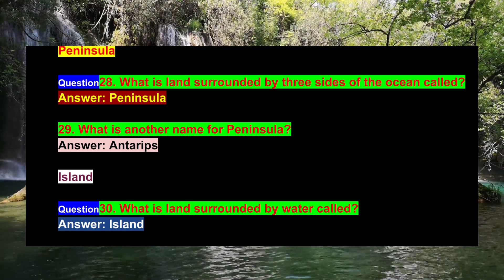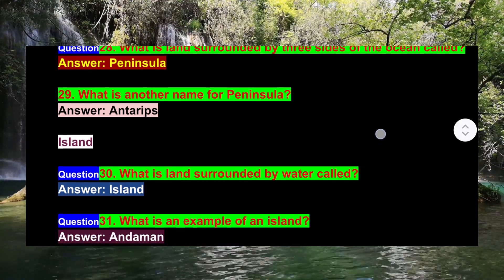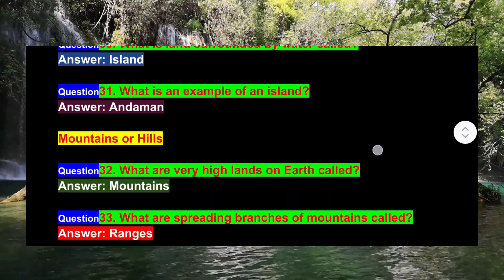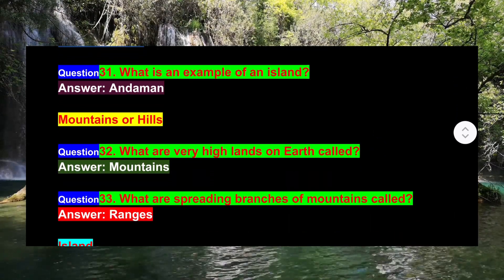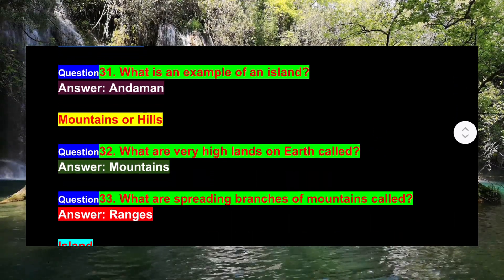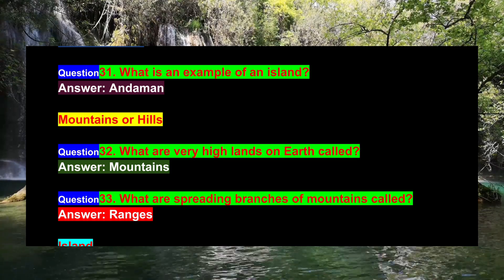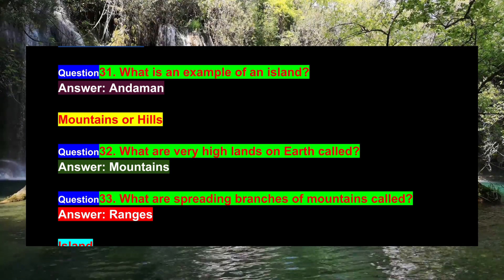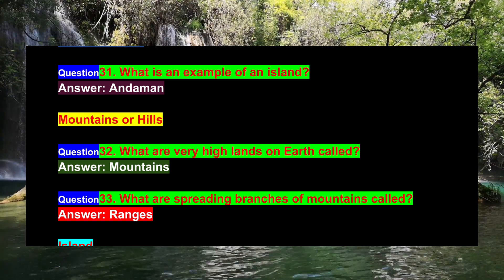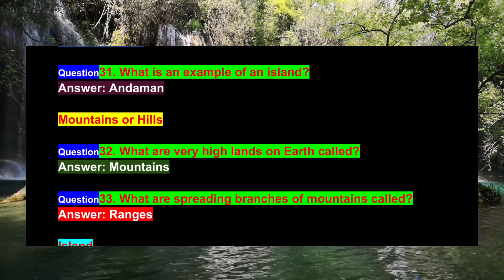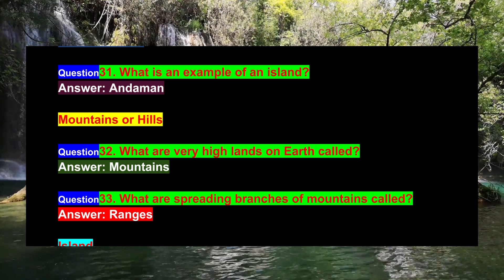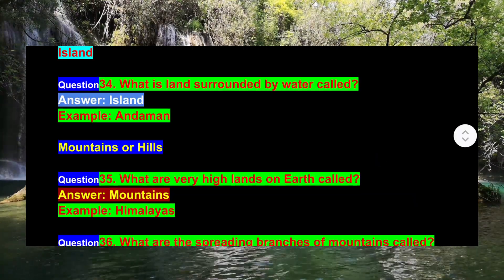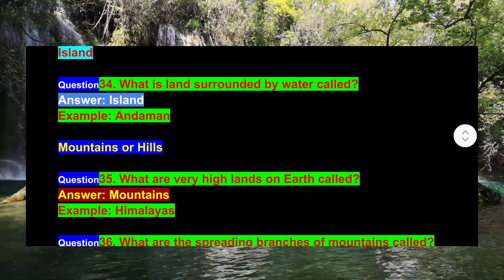Question 31: What is an example of an island? Answer: Andaman Islands. Question 32: What are very high lands on earth called? Answer: Mountains. Question 33: What are spreading branches of mountains called? Answer: Rangers.